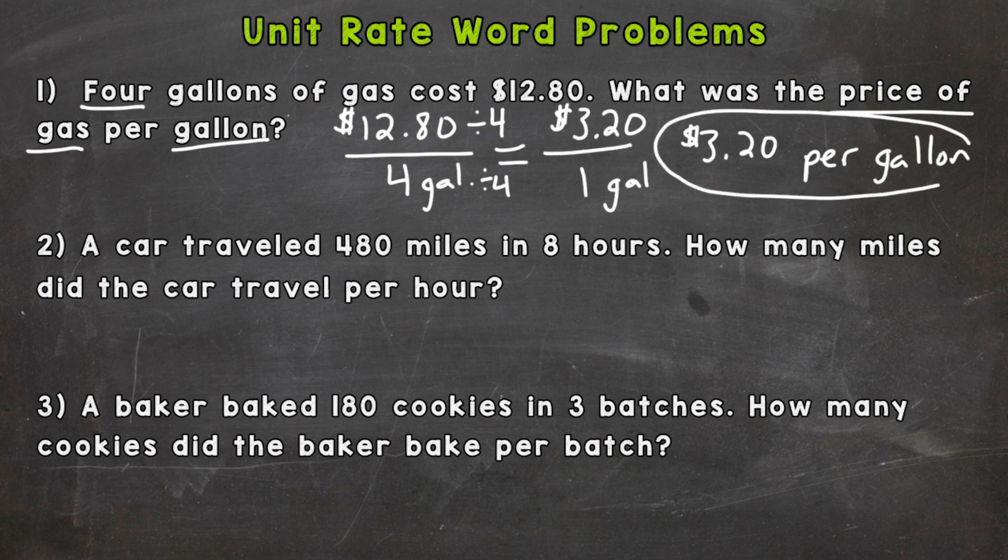Now one thing I want to mention before we go to number two that can sometimes be a common mistake and confusing to some. The order in our original problem, gallons came first here and then come to the bottom. So what you need to do is don't worry about the order in the original situation. Worry about the order that the question is asking you. So the question said price of gas per gallon. So price of gas comes first and then the gallons.